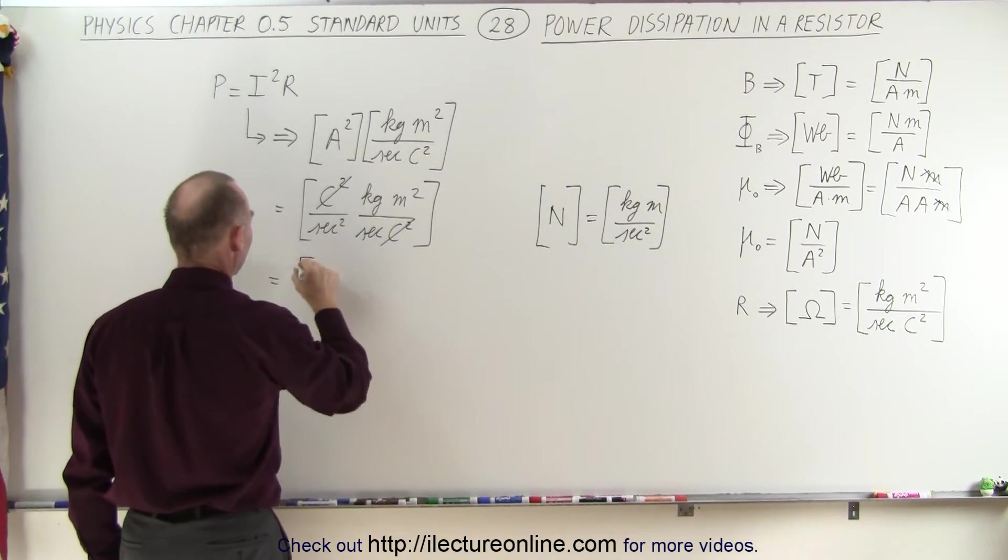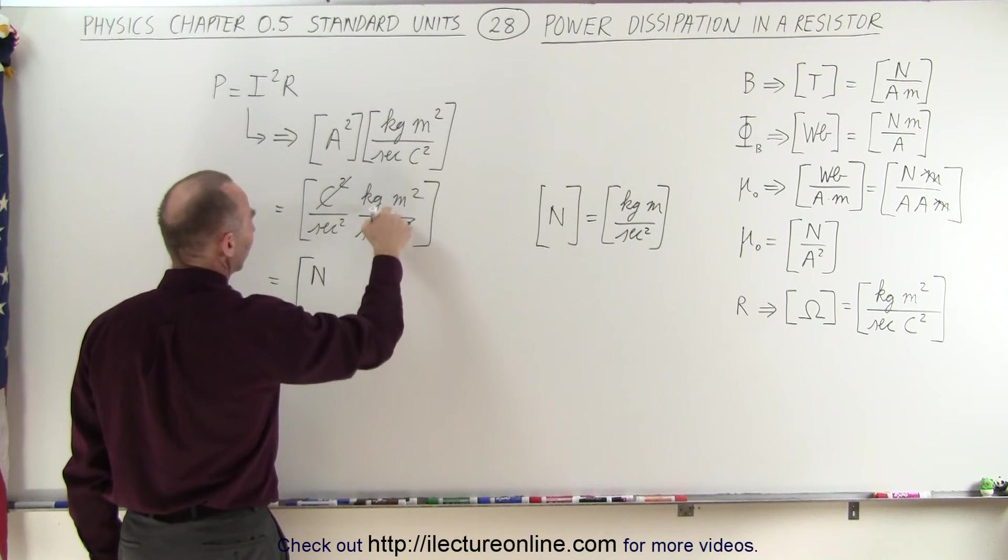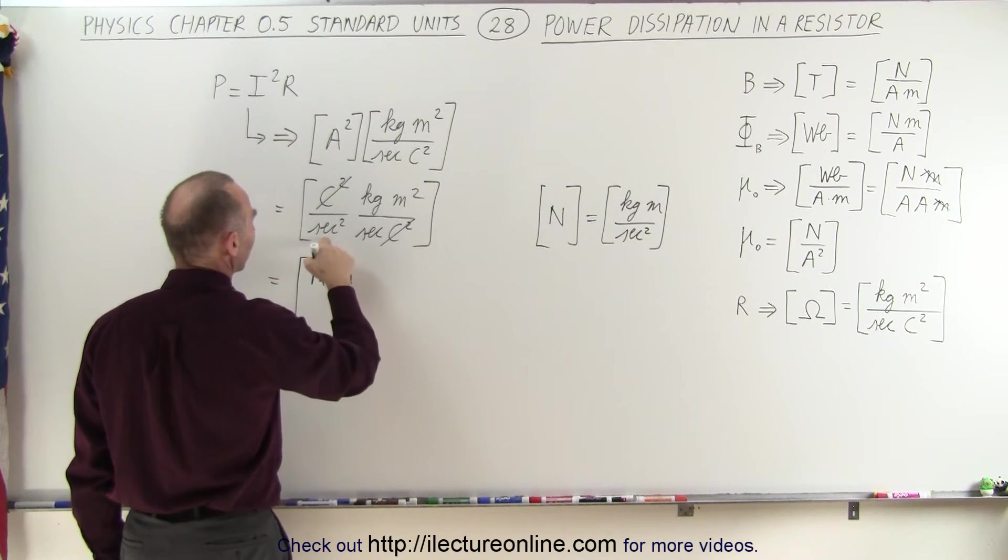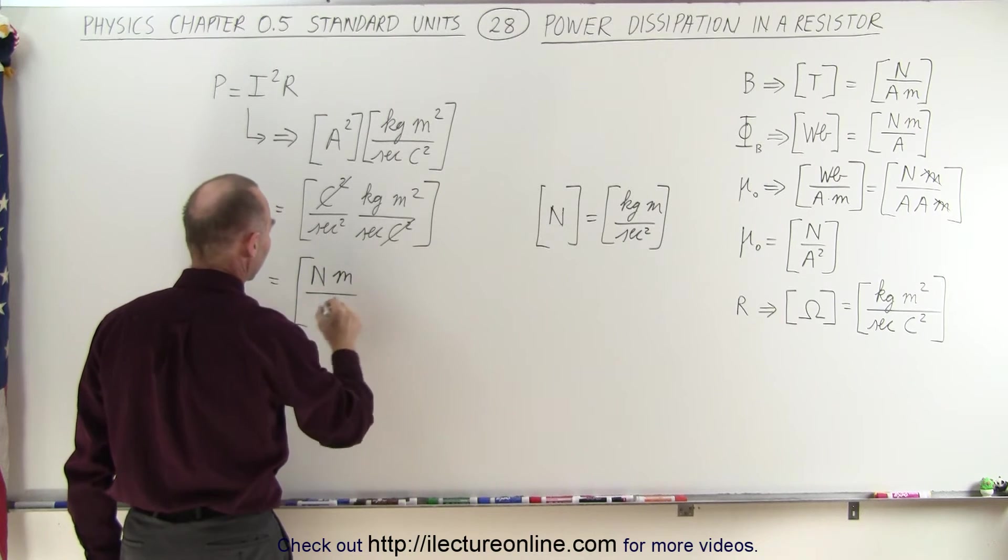So this can now be written as newton. I still have one meter left, so we have a meter, the second squared is gone, but we still have a second there.